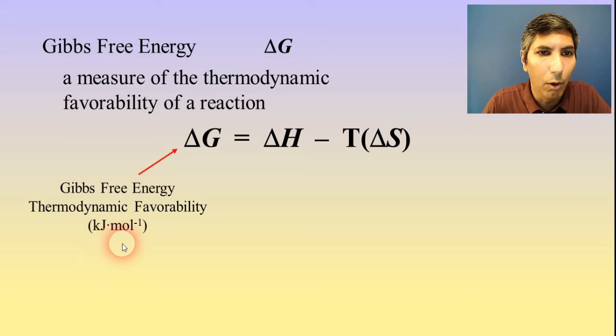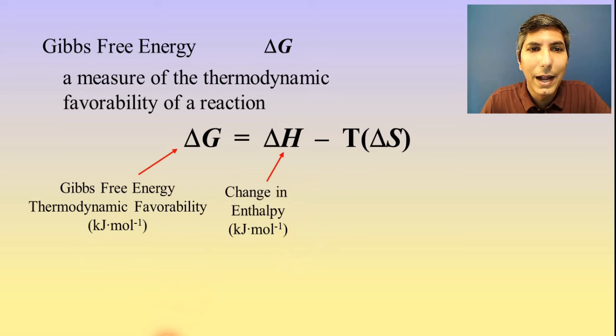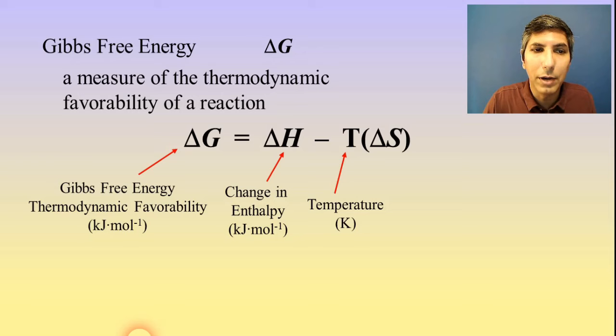Now delta H, we've learned about that before in Unit 6, and that's change in enthalpy. That's also given to us in kilojoules per mole. The T represents the temperature at which we're carrying out the process. Now if you ever see a little degree symbol, as we sometimes see with these thermodynamic values, that means that we're at standard conditions, and temperature is 25 degrees Celsius, or 298 kelvins. Sometimes we have to use a different temperature though, unless it specifies that.